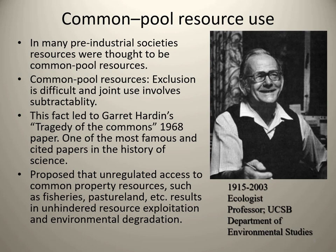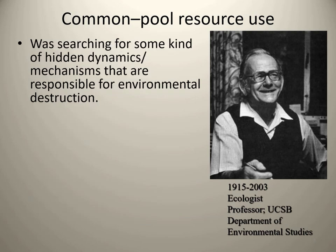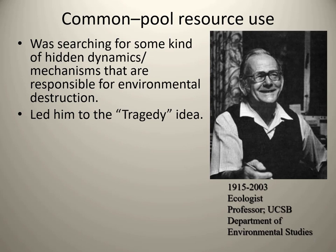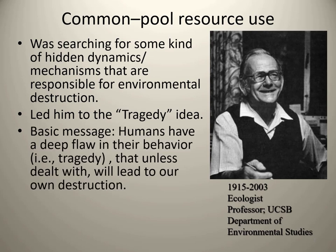This fact led to Garrett Hardin's 'Tragedy of the Commons,' his 1968 paper — one of the most famous and cited papers in the history of science. He makes a very compelling argument. What he proposes is that unregulated access to common property resources — such as fisheries, pasture land, or forests — results in unhindered resource exploitation and environmental degradation. Hardin was searching for a hidden dynamic responsible for the environmental destruction he was seeing, and his basic message is that humans have a deep flaw: the tragedy is that we will always act in our own rational self-interest despite potentially negative consequences for the group.